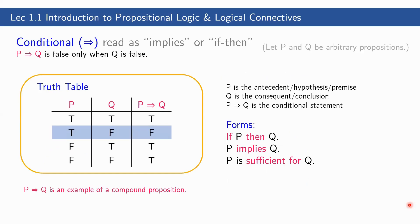Next we have conditional statements, also called conditional propositions. This is read as 'implies' or 'if…then.' P implies Q is false only when Q is false. P is the antecedent, hypothesis, or premise; Q is the consequent or conclusion. P implies Q — or 'if P then Q' — or 'P is sufficient for Q' — is what we call the conditional statement. It will only become false when the conclusion or consequent is false.